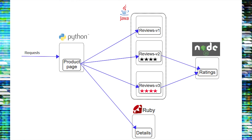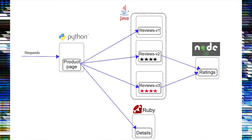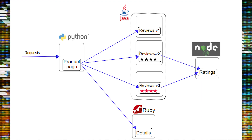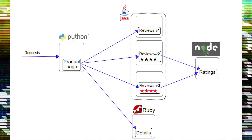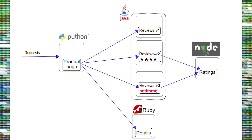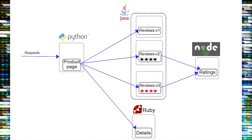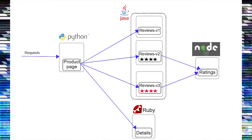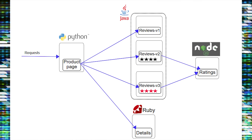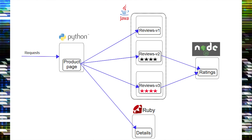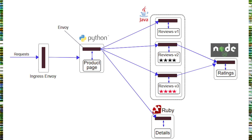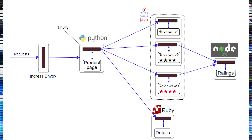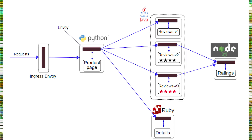Version one does not call the rating service. Version two calls the rating service and displays each rating as one to five black stars. Version three of reviews displays the rating as one to five red stars.